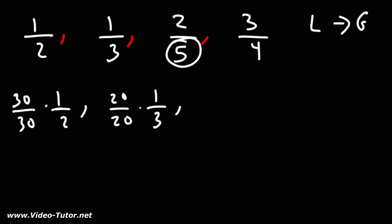60 divided by 5 is 12. So the third fraction I'm going to multiply it by 12 over 12.